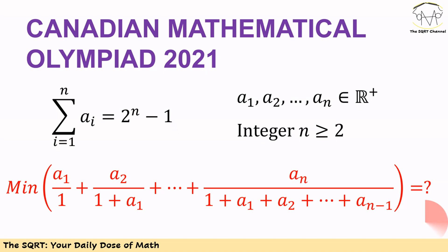We know the sum of ai for i equals 1 to n is equal to 2 to the power of n minus 1. We want to find the minimum possible value that the expression you see here will get.